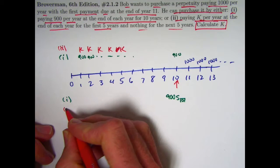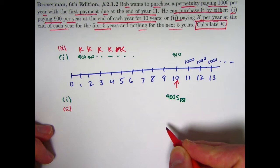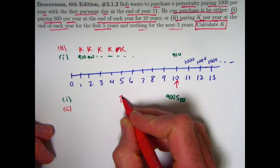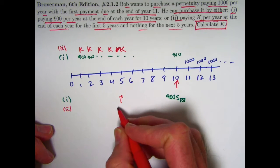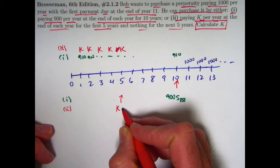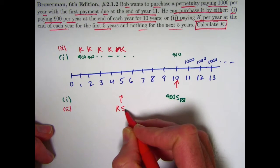What about the value for option two at time 10? Well, if we first find its value at time five, we can think of it as an annuity immediate, and we are finding the future value at time five to be k times S5.